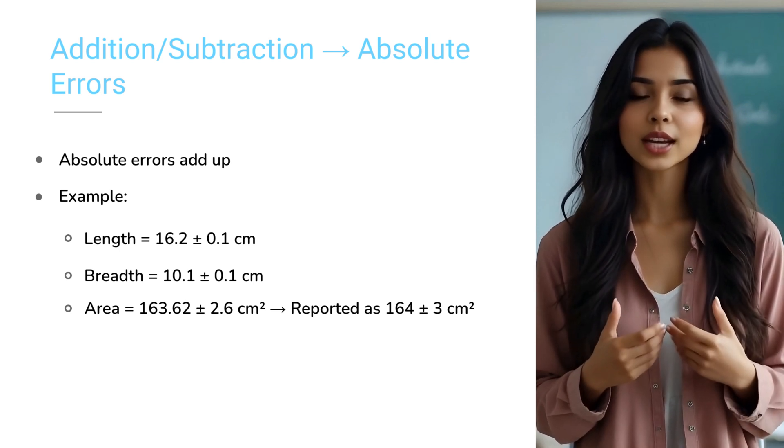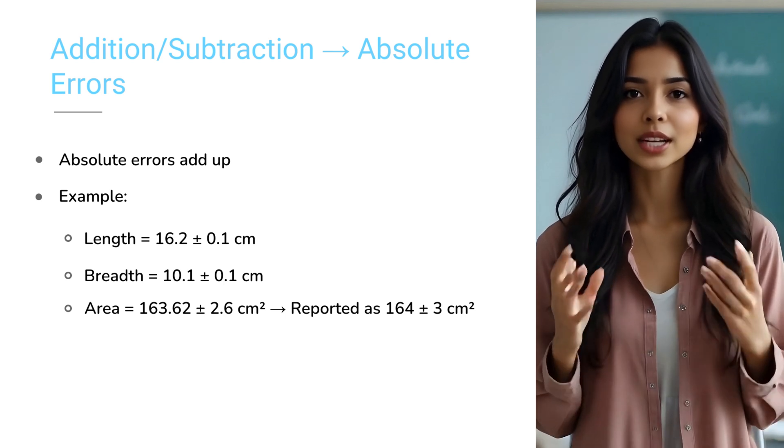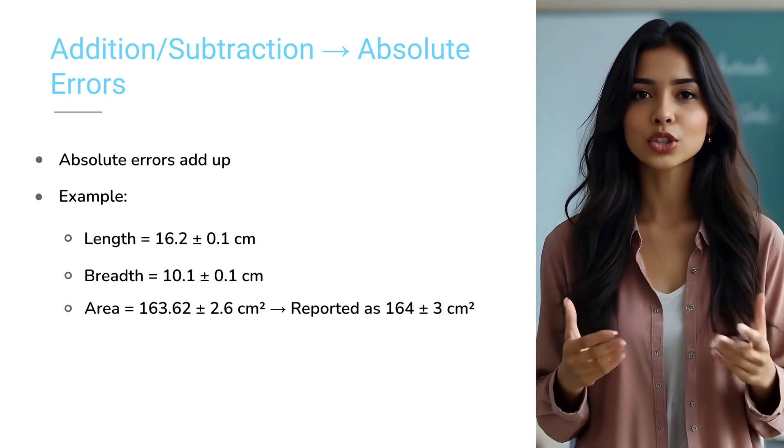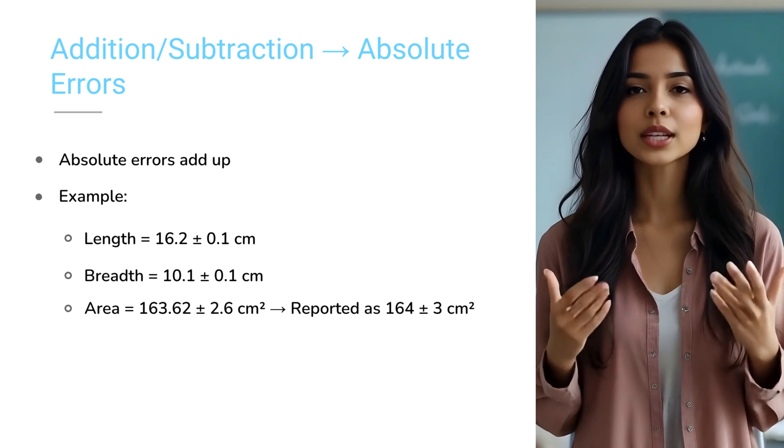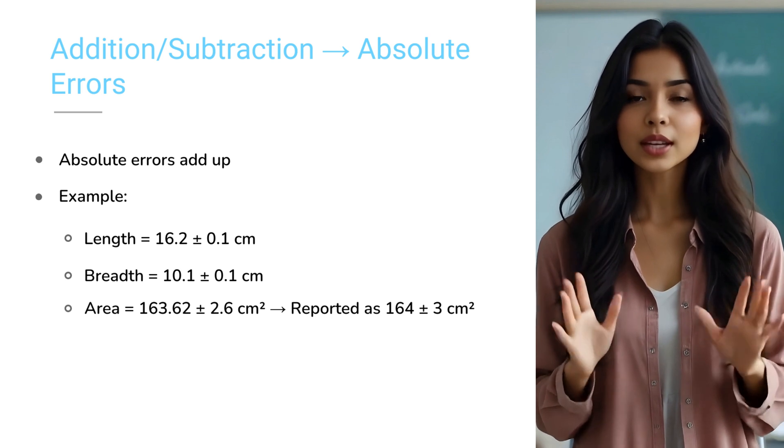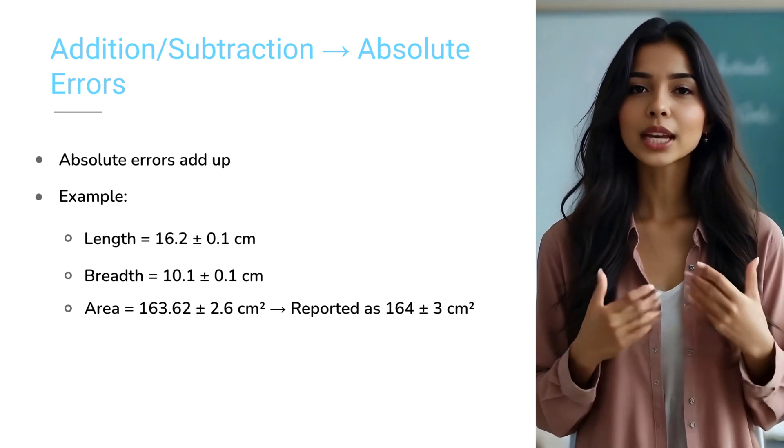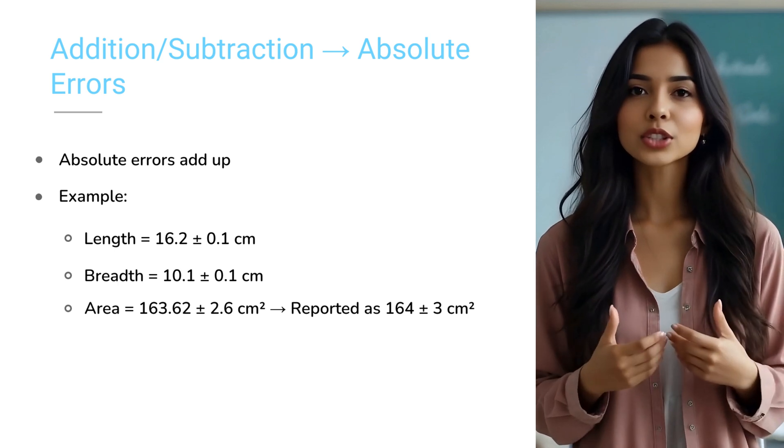Next, find the relative error. Relative error in length is 0.1 divided by 16.2, equals to 0.6%. Relative error in breadth is 0.1 divided by 10.1, equals to 1.0%. Since this is multiplication, we add the relative errors.